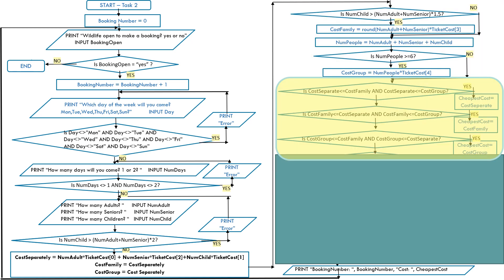Now that we've calculated cost separately, cost family, and cost group, it's time to find the minimum. Three decision boxes decide which is cheapest. First: is cost separate ≤ cost family AND cost separate ≤ cost group? If yes, cheapest cost is cost separate. Second: is cost family ≤ cost separate AND cost family ≤ cost group? Then cheapest is cost family. Third: is cost group ≤ cost family AND cost group ≤ cost separate? Then cheapest cost is cost group.